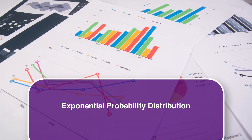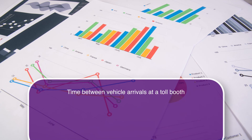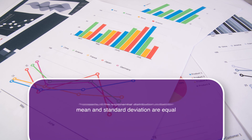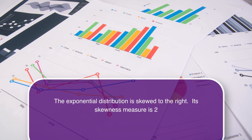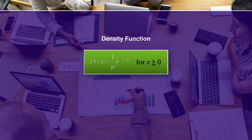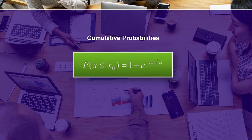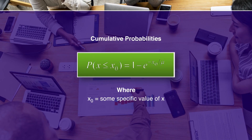The exponential probability distribution is useful in describing the time it takes to complete a task. The exponential random variable can describe time between vehicle arrivals at a toll booth, time required to complete a questionnaire, and distance between major defects in a highway. In waiting line applications, the exponential distribution is often used for service times. A property is that the mean and standard deviation are equal, and the distribution is skewed to the right with skewness measure of 2. The density function is f(x) = (1/μ)e^(−x/μ) for x ≥ 0, where μ is the mean and e is 2.71828. Cumulative probability: P(x ≤ x₀) = 1 − e^(−x₀/μ).